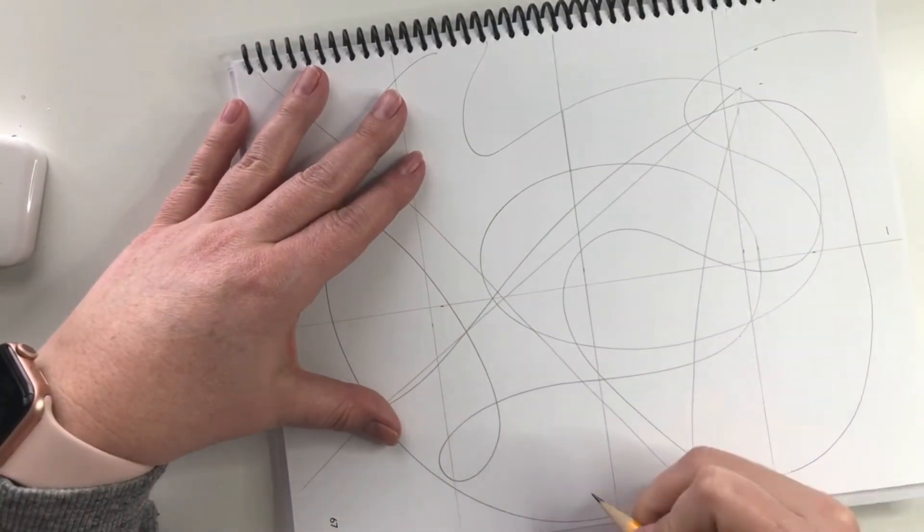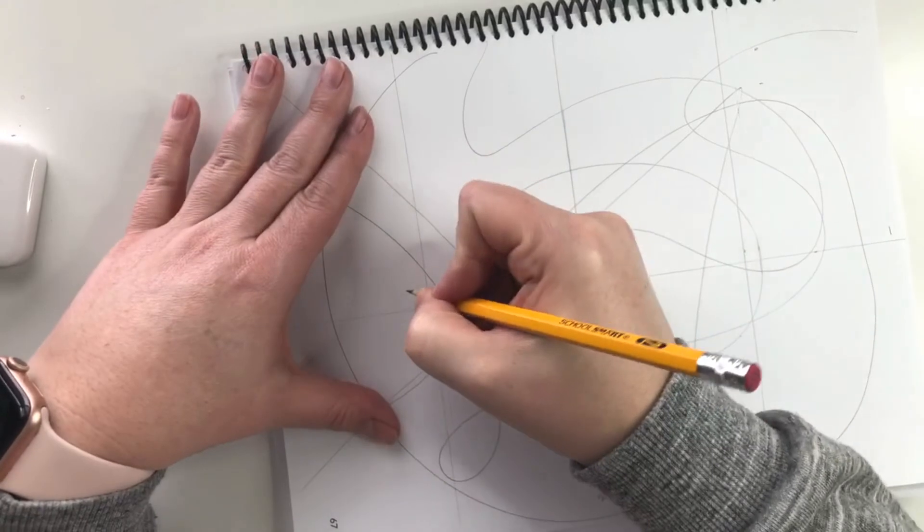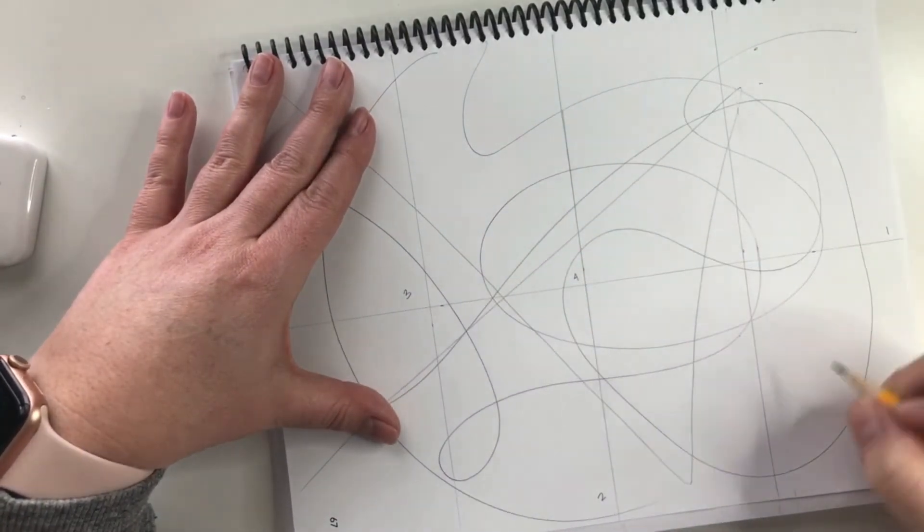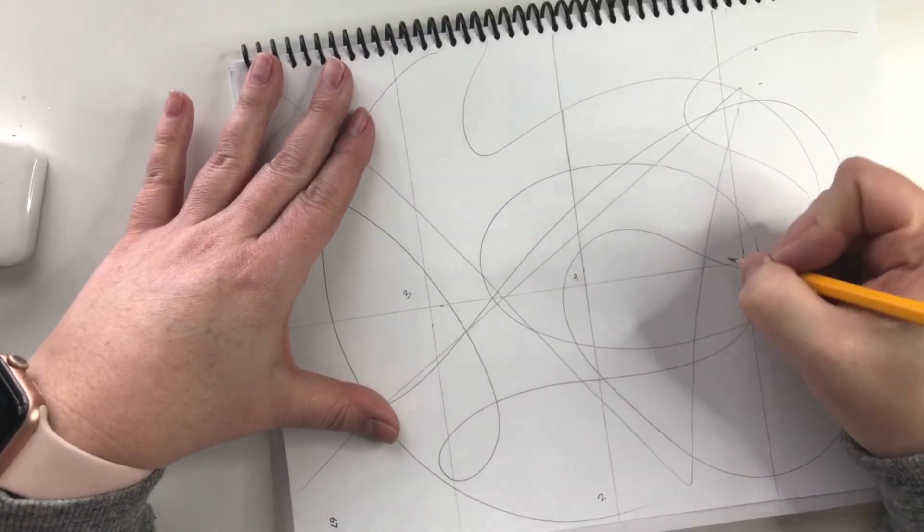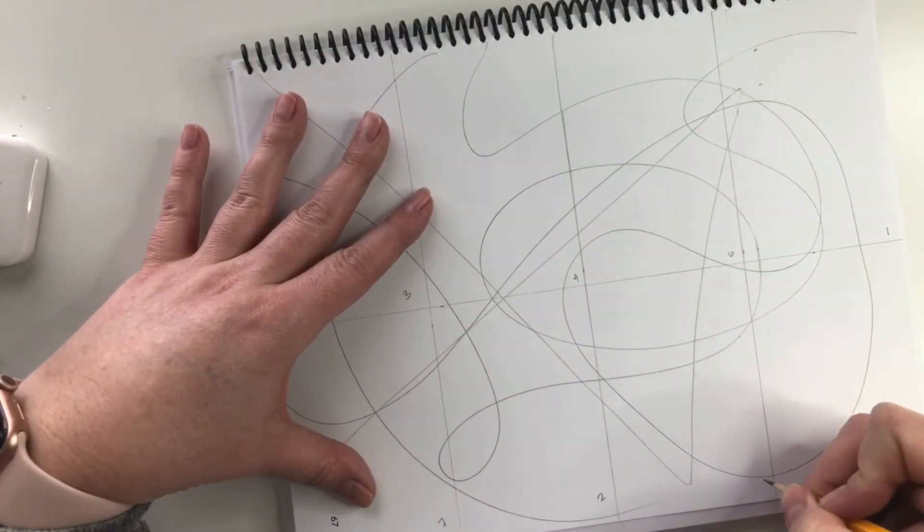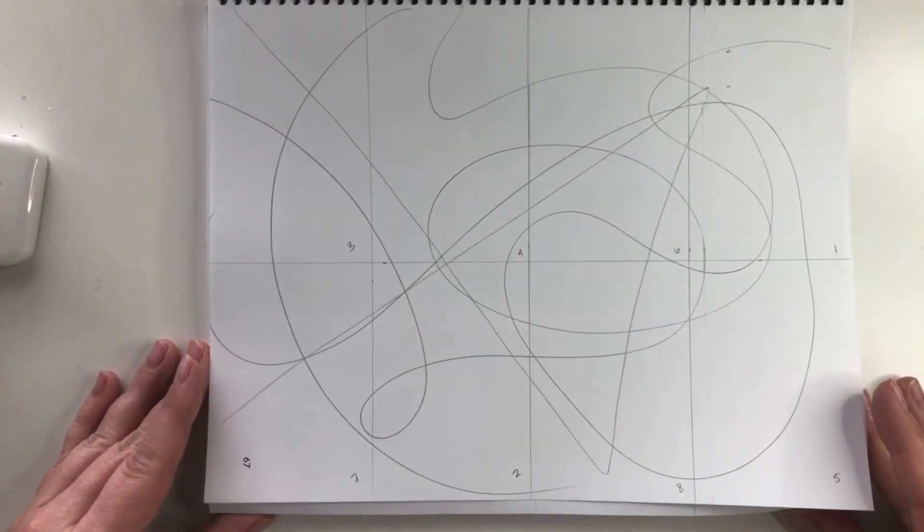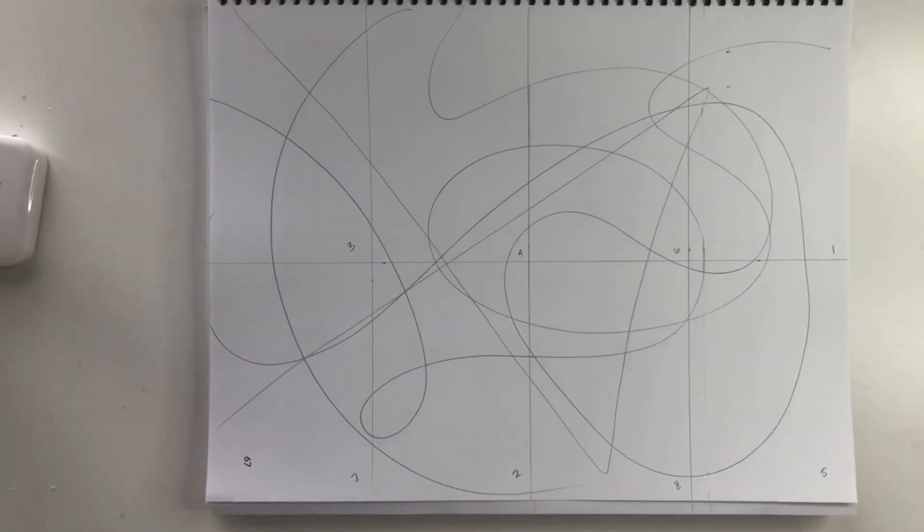The next thing you do is randomly number. So you can see I'm moving around, I'm being very random with where I am putting my numbers. That is the purpose of this assignment, so you don't have to number straight across or up and down. And that is your setup for the assignment.